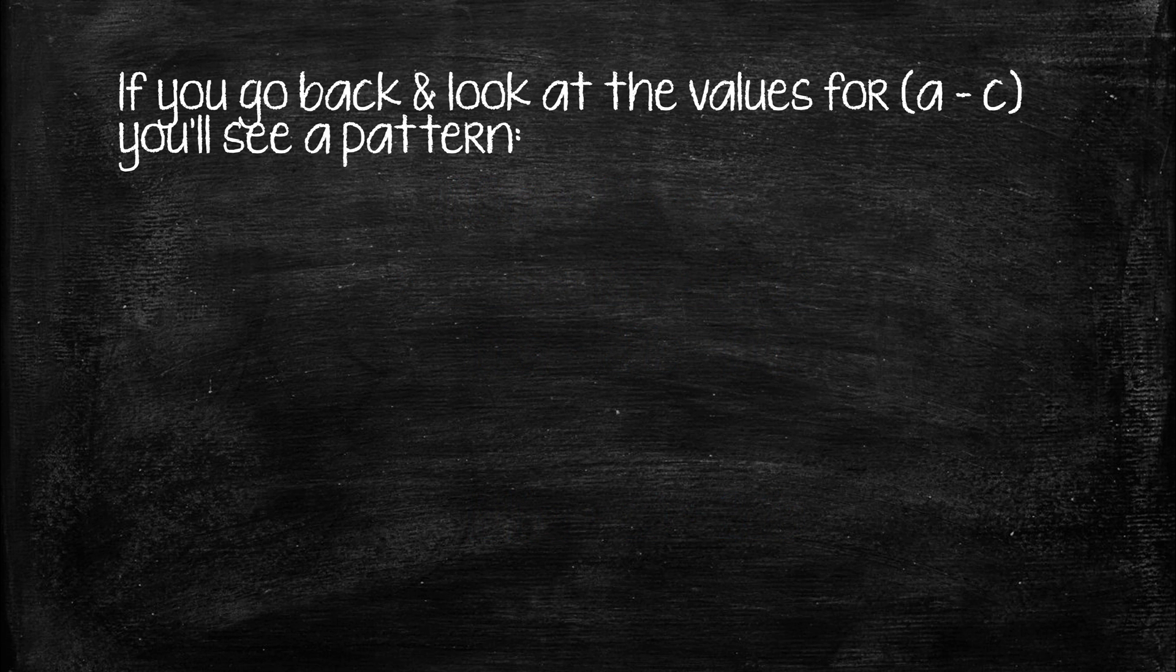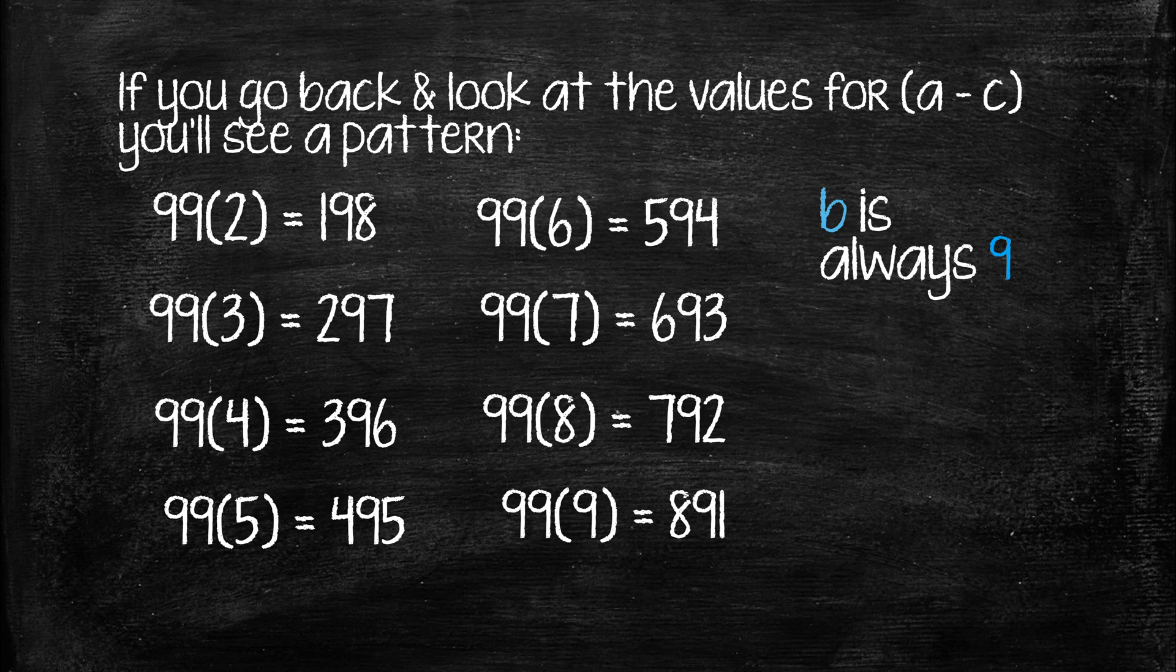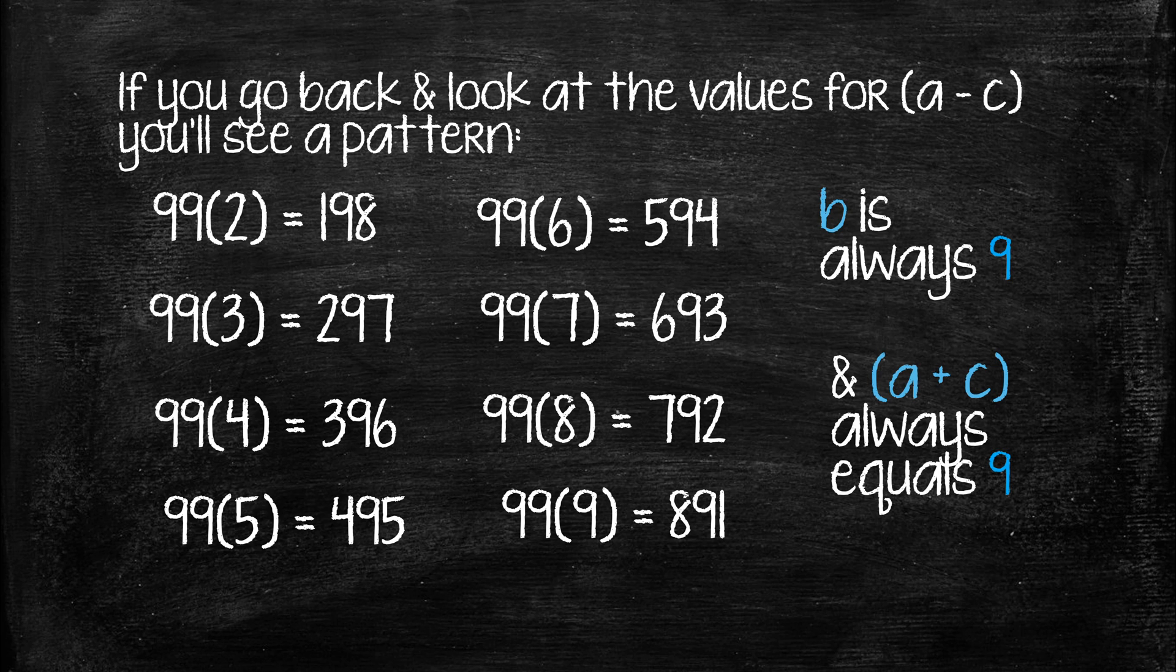So if you go back and look at the values for A minus C, you'll see a pattern. The middle number always ends up being a 9, so B is always 9. And then A plus C always equals 9. In the first example, 1 plus 8 equals 9. The second, 2 plus 7 equals 9, and so on.